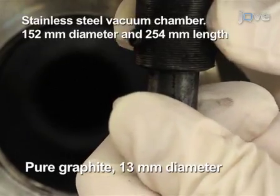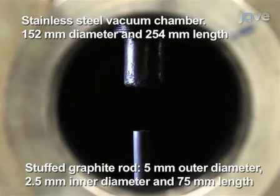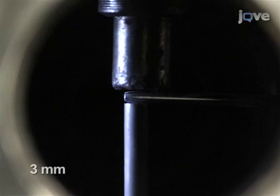Install a cathode rod and the stuffed anode rod inside the cylindrical chamber. Adjust the gap distance between the cathode and anode to about 3 mm.